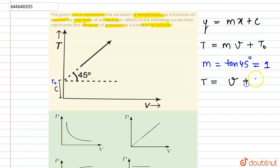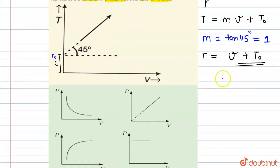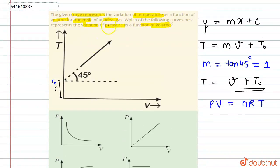Now we know that PV equals nRT. As this is one mole of ideal gas, so the value of n equals 1. So from this we can write that PV equals RT.